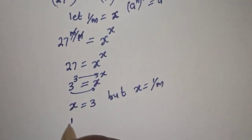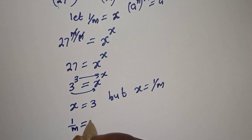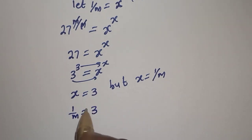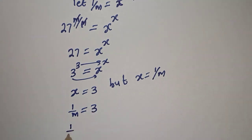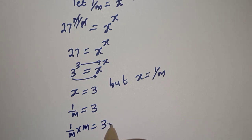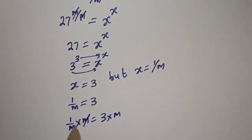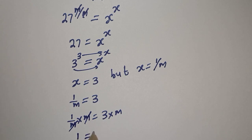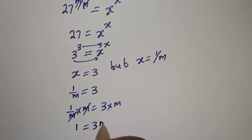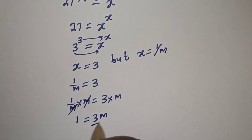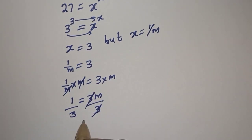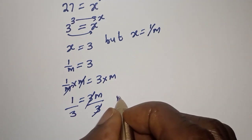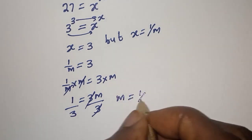Since s is equal to 1 over m, we have 1 over m equals 3. Multiplying both sides by m and dividing both sides by 3, we get m is equal to 1 over 3.